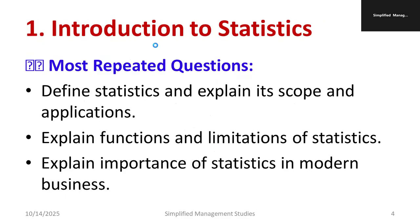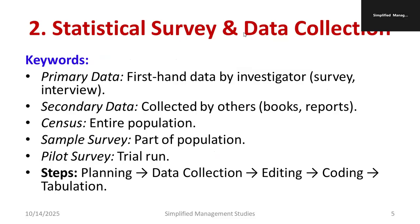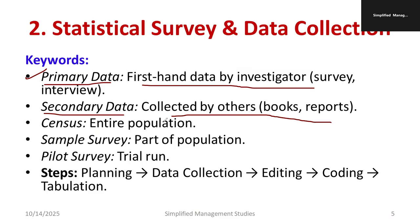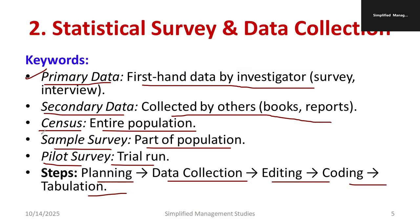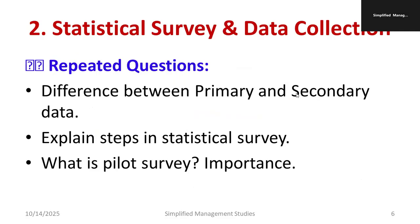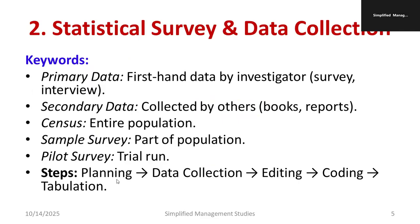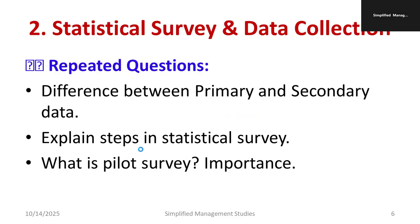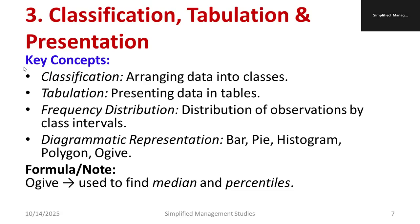Regarding statistics, survey, and data collection: primary data is first-hand data collected by the investigator through survey, interview, Delphi method, etc. Secondary data is collected by others from books, reports, and papers. Census covers the entire population; sample survey covers part of the population. A pilot survey is a trial run. Steps involved include planning, data collection, editing, coding, and tabulation. Probable questions: difference between primary and secondary data, explain the steps of statistical survey, what is a pilot survey and its importance.